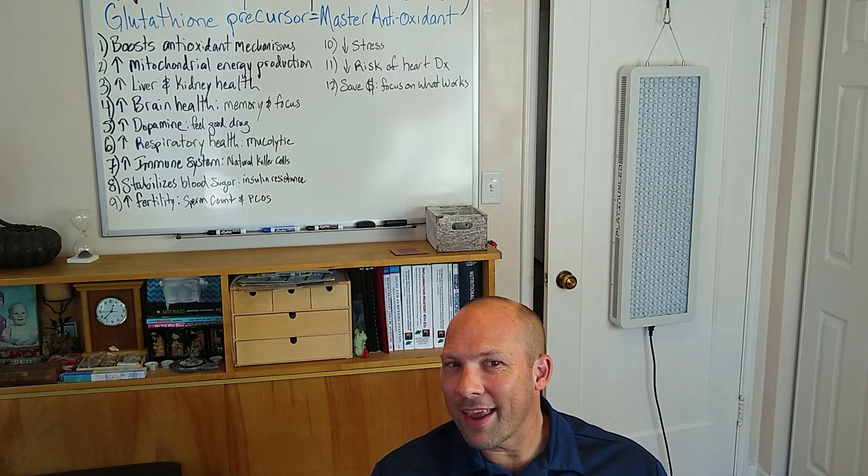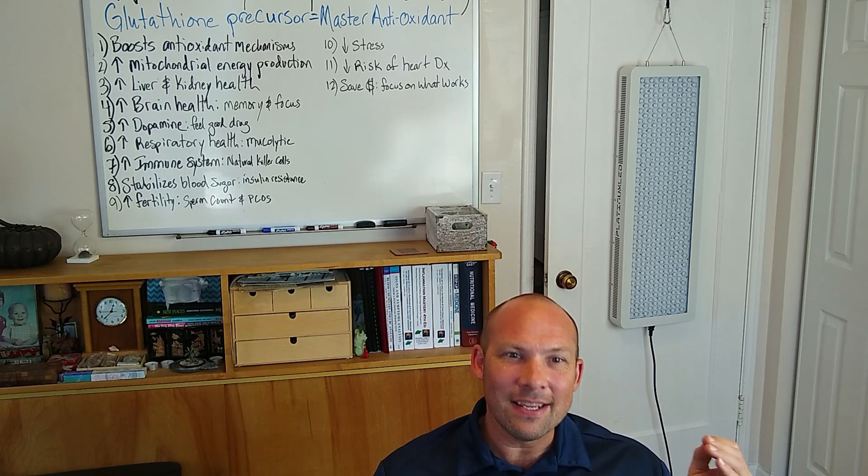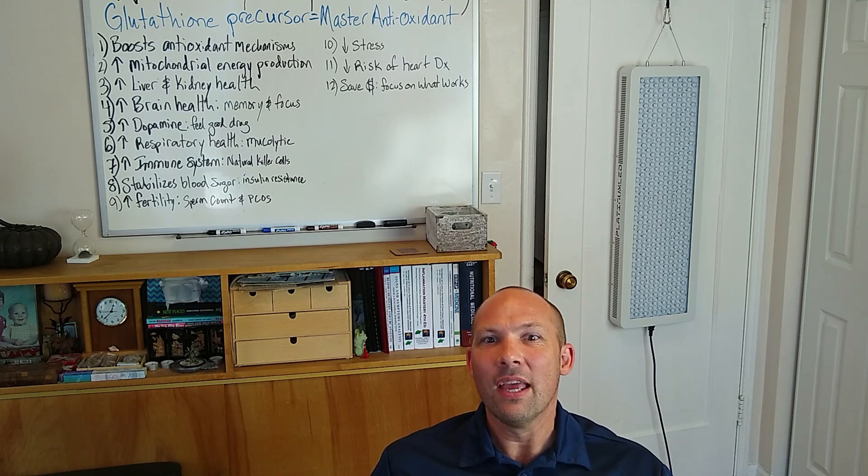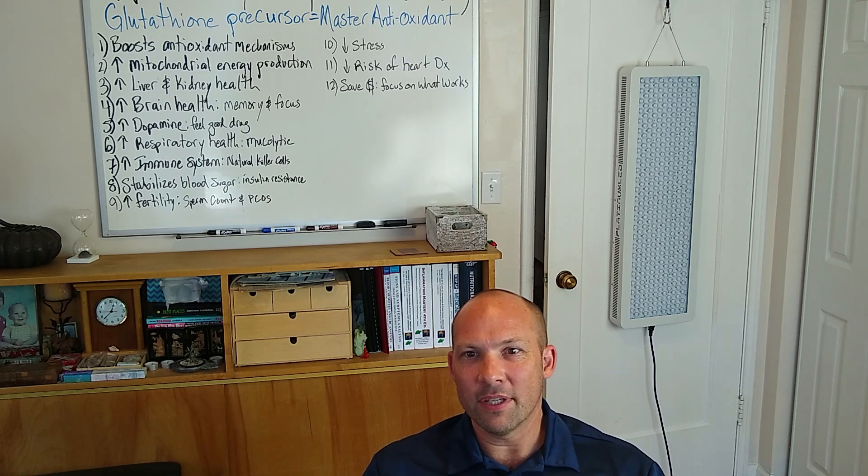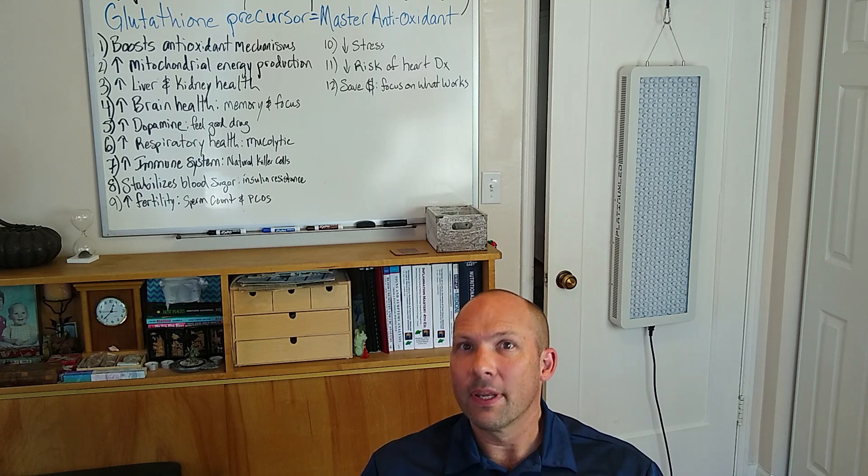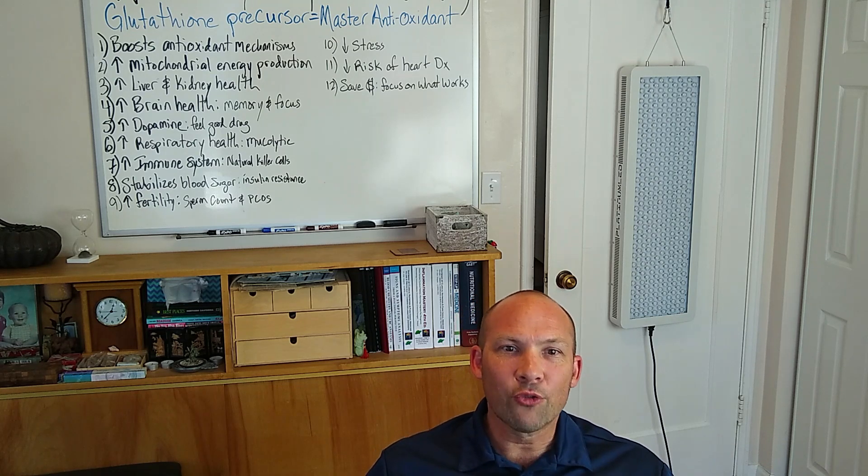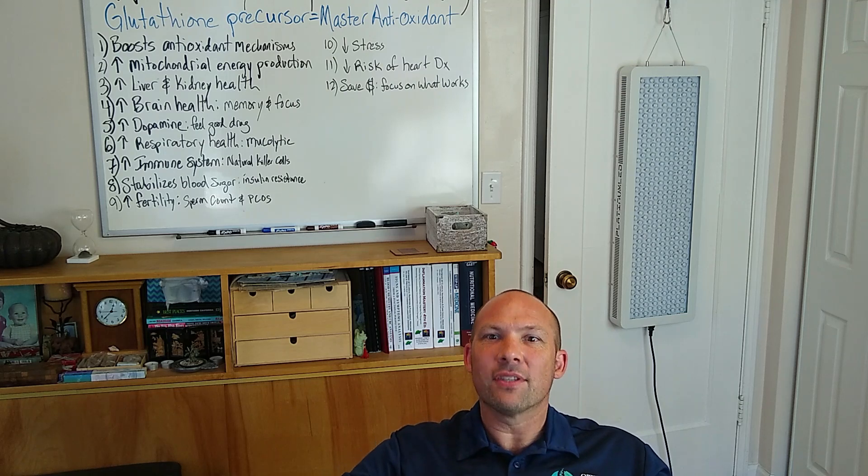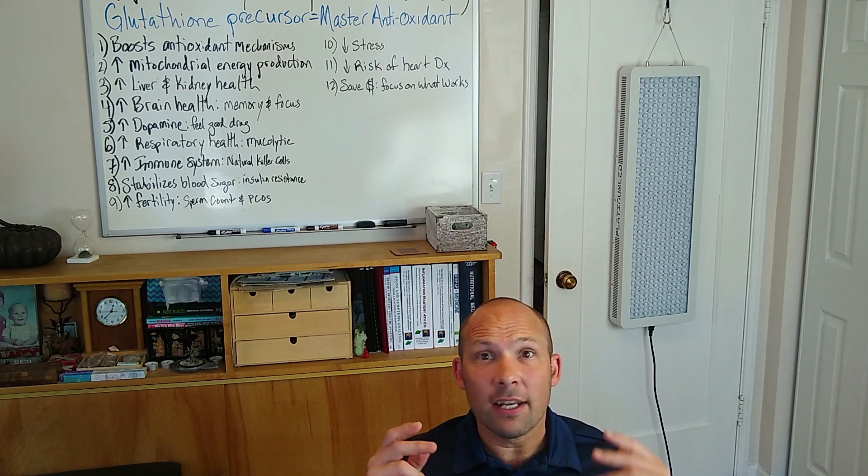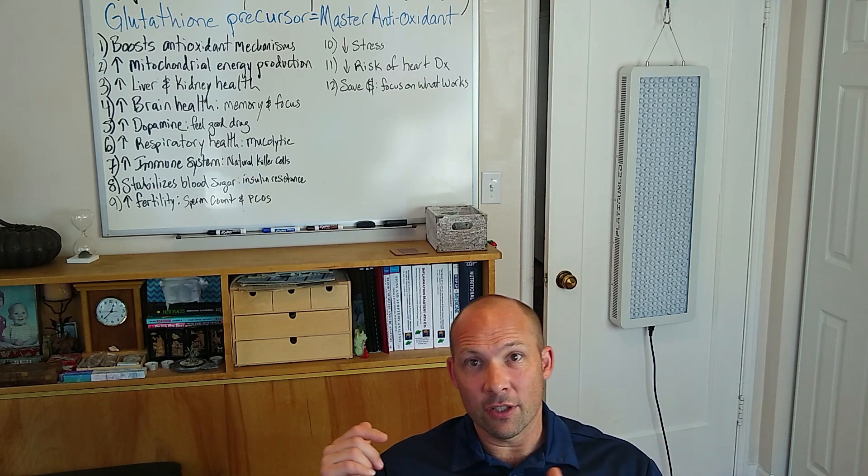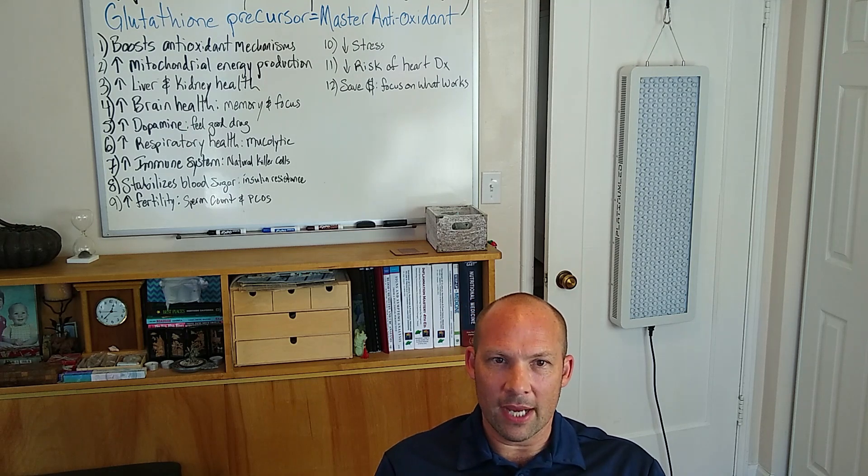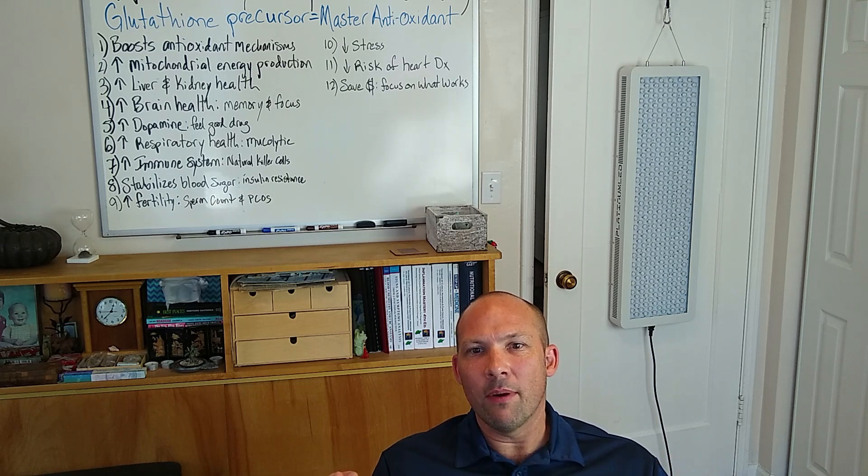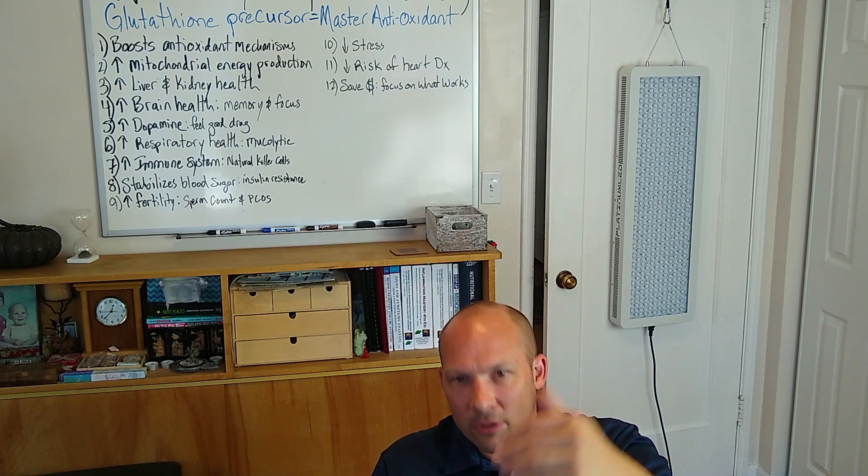But, we can also use NAC, and NAC in its acetylated form of cysteine, not a normal form of cysteine. And so, N-acetyl group allows for the absorption of cysteine, and it protects it from the stomach acids. And this is done in the same way that the N-acetyl glutathione helps to protect it. It is also the most important amino acid to produce glutathione.